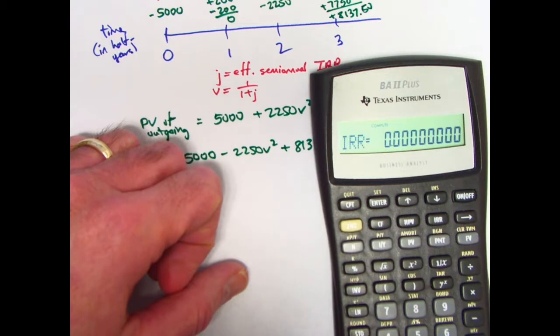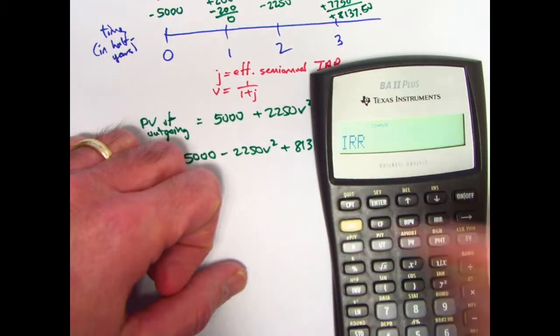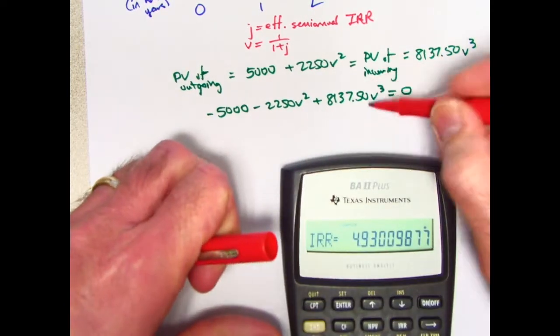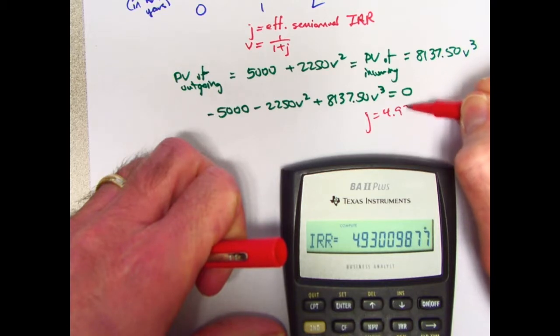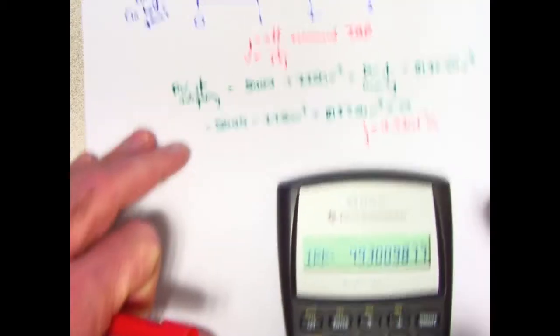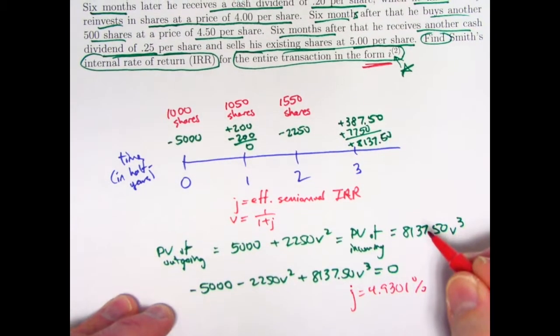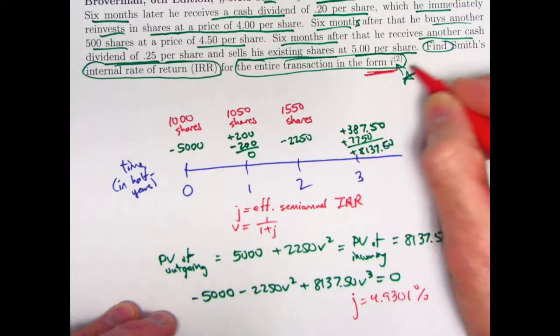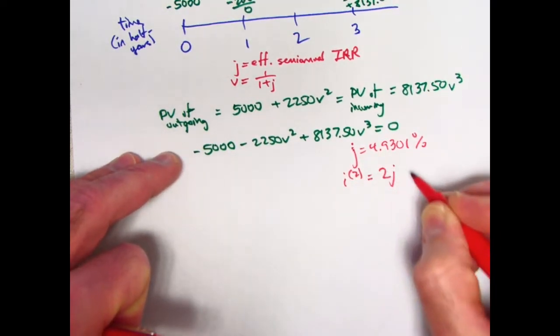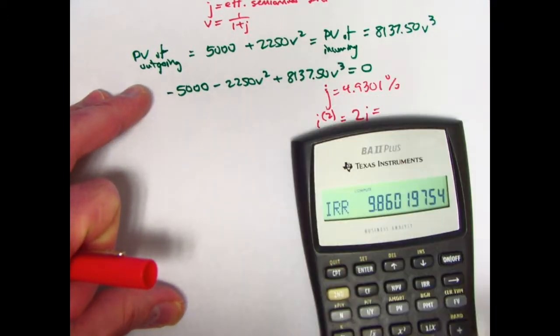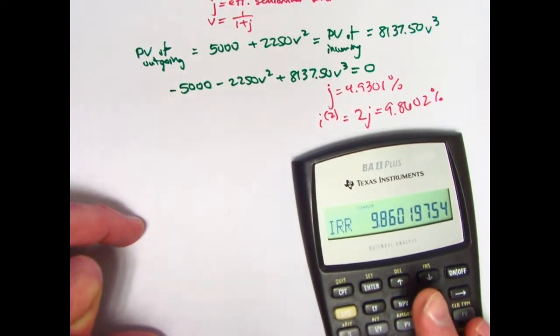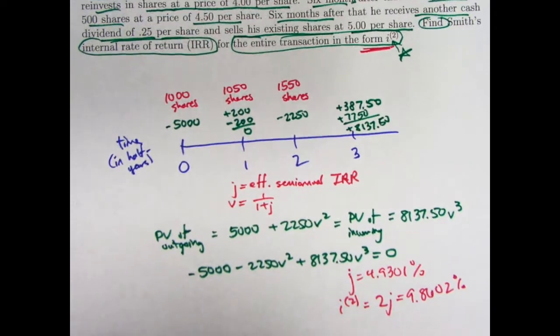Now we are ready to compute IRR. Hit IRR for internal rate of return, then press CPT for compute. There it is—it's giving it as a percent: 4.93%. That is the value of J. The back of the book gives 4.9301%. However, that's not the best answer according to the directions. I-2 would be what I get by doubling J. If I multiply this by 2, 9.8602% would be the corresponding nominal annual rate.